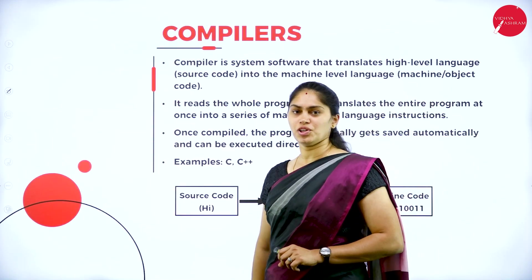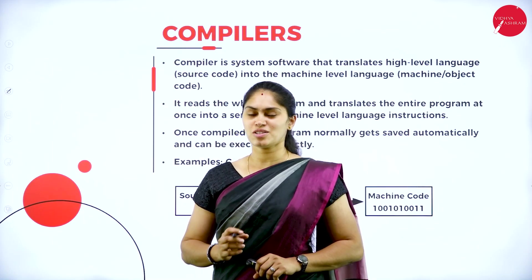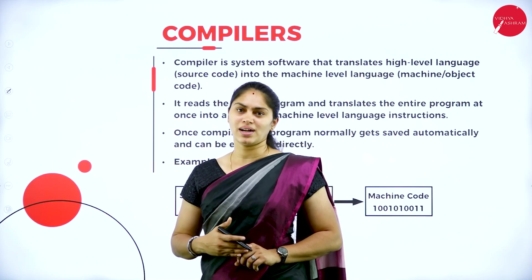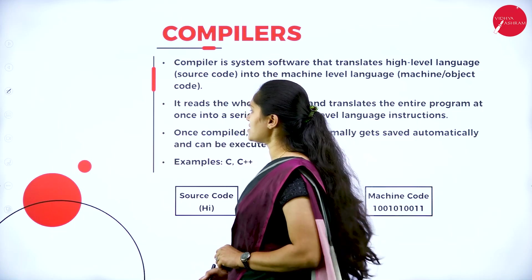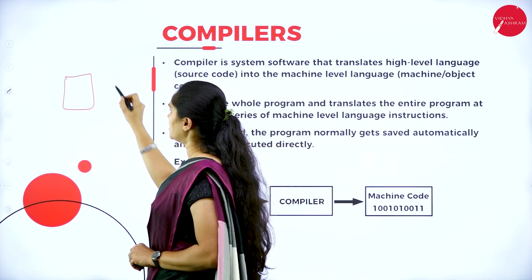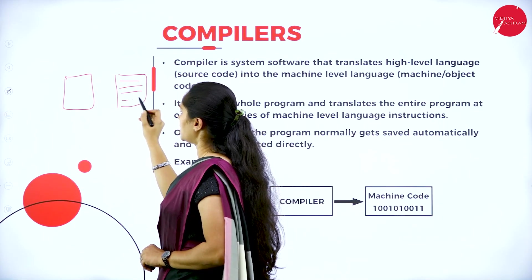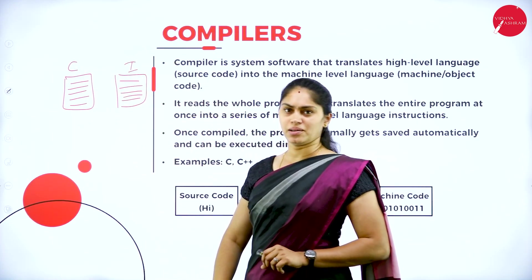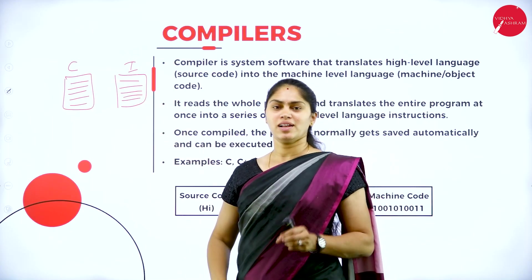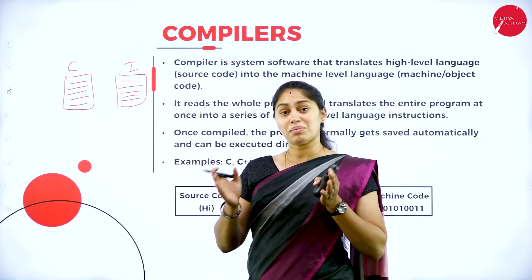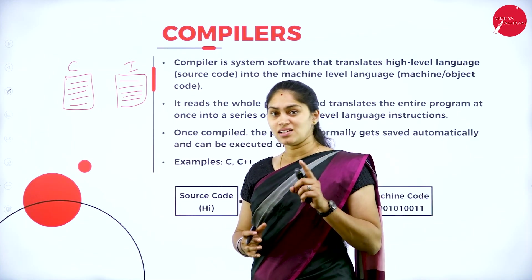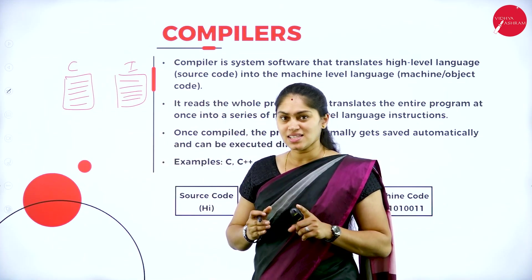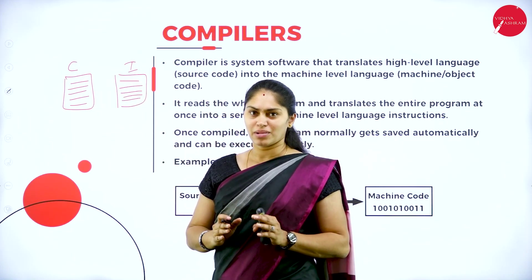Next, we look at compilers. There is a slight difference between a compiler and an interpreter. Both convert high level programming language into its equivalent machine language. However, a compiler reads the whole program at once and translates the entire program into its equivalent machine code — whether it's five lines, five hundred lines, or a thousand lines, the whole program is compiled at once.